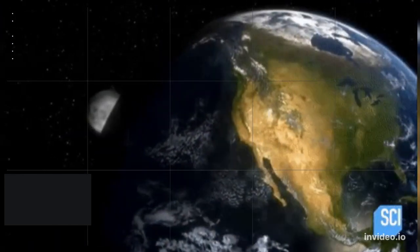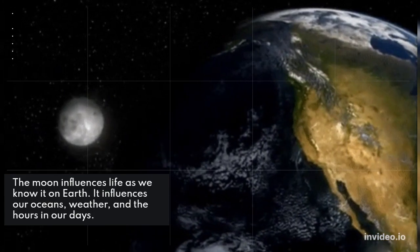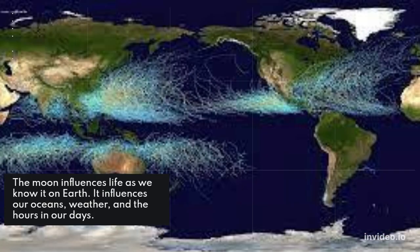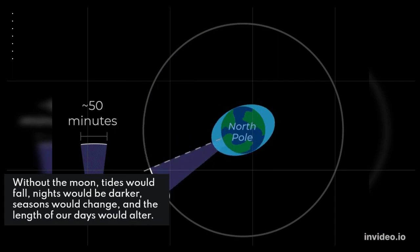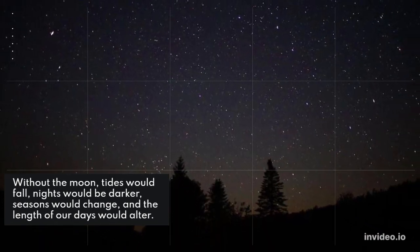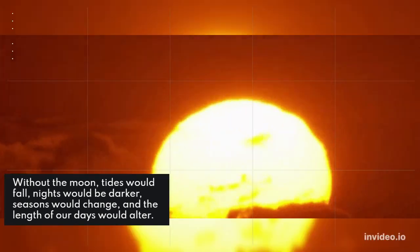The Moon influences life as we know it on Earth. It influences our oceans, weather, and the hours in our days. Without the Moon, tides would fall, nights would be darker, seasons would change, and the length of our days would alter.